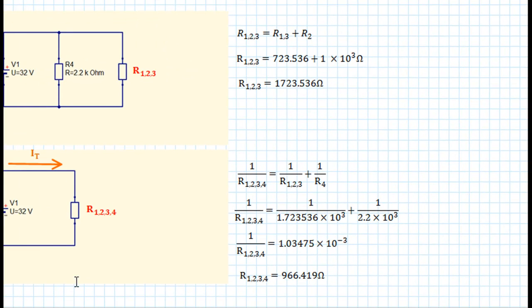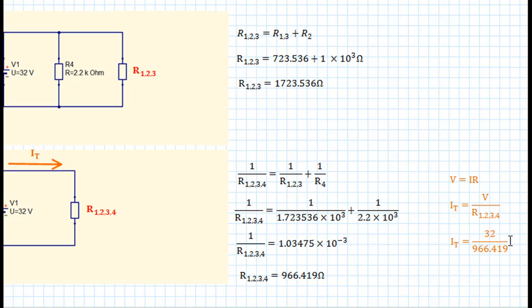So we've worked our way down and simplified the circuit as much as we can. Now let's work out the total current flowing through the circuit. Starting with V equals IR transposed for I: the total current equals V, which is 32 volts, divided by R1234, the effective resistance of the circuit. Substituting in: 32 divided by 966.419 gives the total current as 0.03311 amps, or 33.11 milliamps.